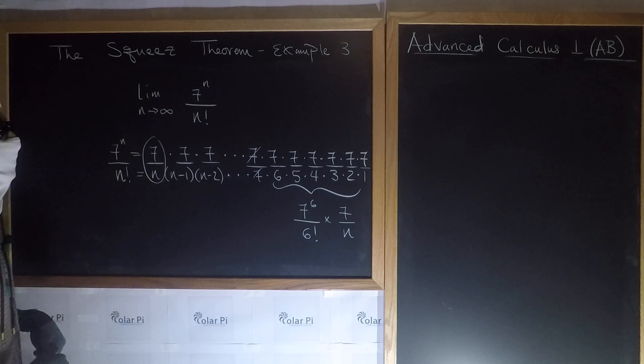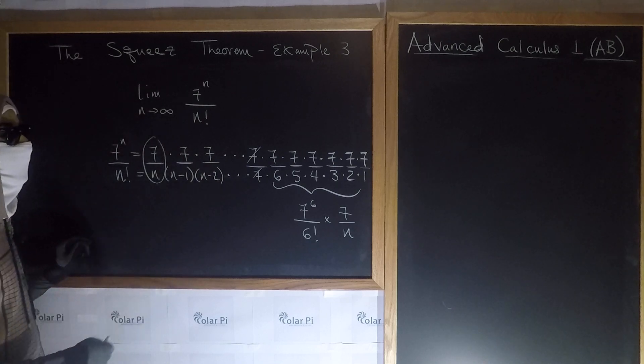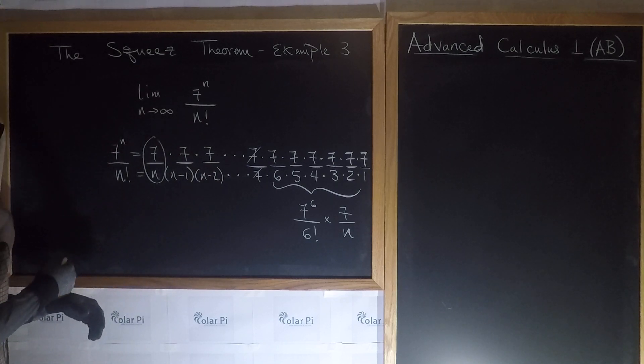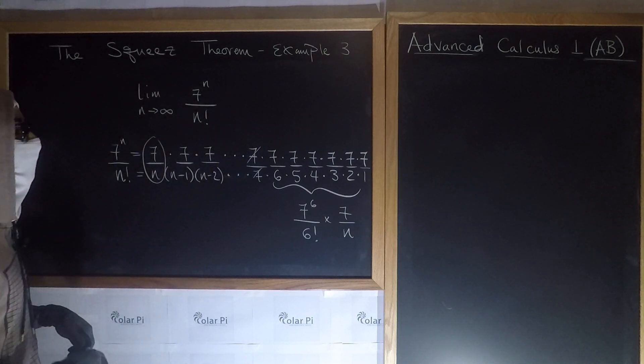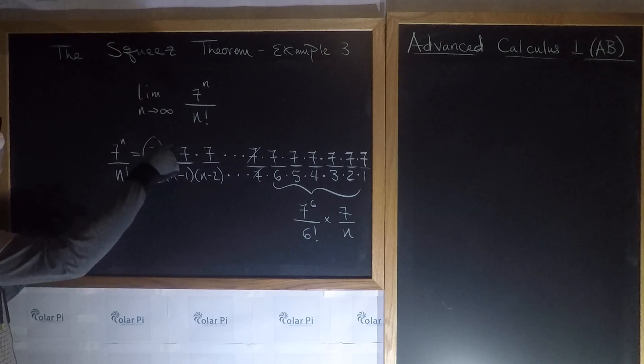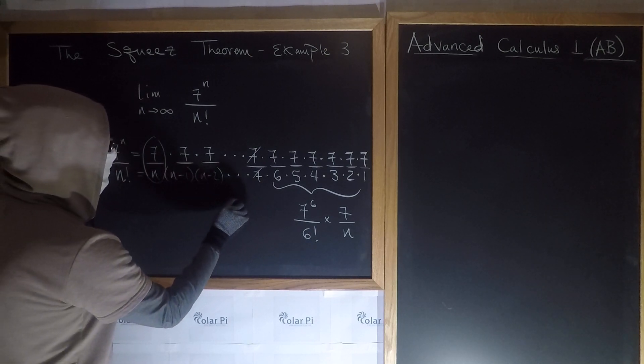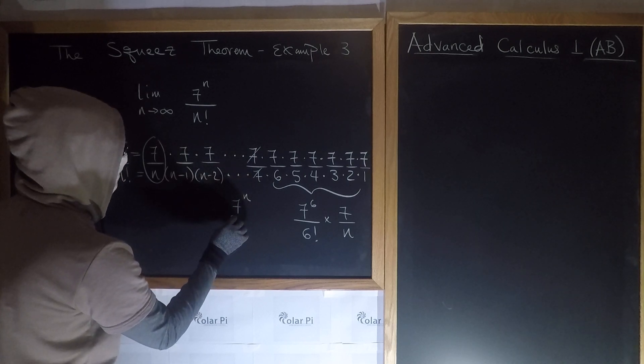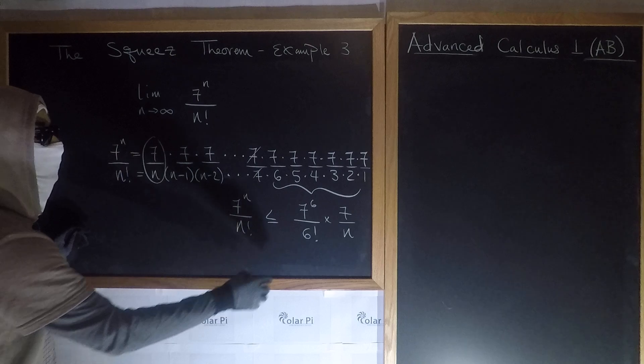And immediately to the left of it is going to be 7 over 9, which is also less than 1. So the n minus 8 fractions in here are all less than 1. So if we replace all of them by 1, then surely I can say this, which is 7 to the n over n factorial is less or equal to this.